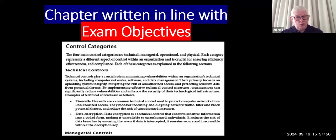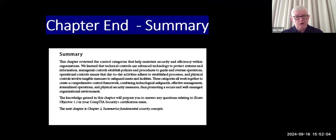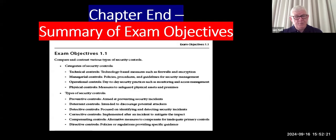So if you go to control categories, you look at technical controls, you'll see that that's one of the first ones, followed by managerial. Then the chapter ends with a summary that summarizes what you've just done and tells you that once you've gained the knowledge in this chapter, you're ready for exam objective 1.1. Then after that there's a summary of the exam objectives — it's like a shortcut. Technical controls: technology-based measures such as firewalls and encryption.